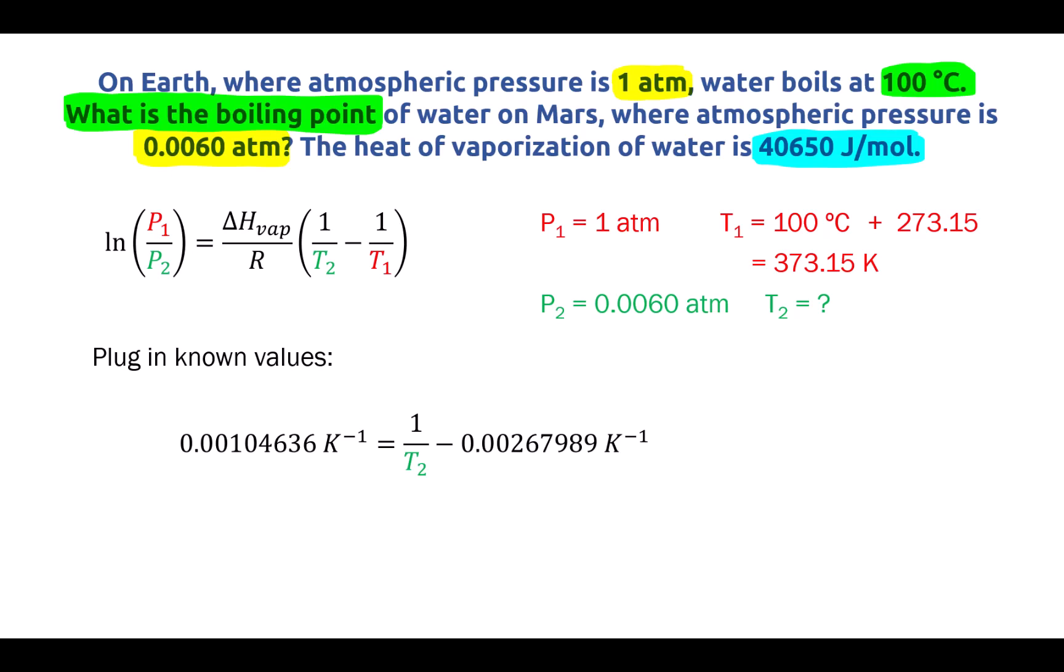In order to get 1 over T2 isolated, I'm going to have to bring the negative 0.00267989 to the other side of the equation. So I'm gonna add it to the left side. Now I've isolated 1 over T2. When I add these two numbers together, 1 over T2 is equal to 0.00372625 Kelvin to the minus 1.